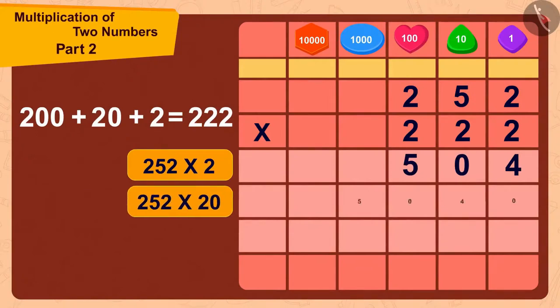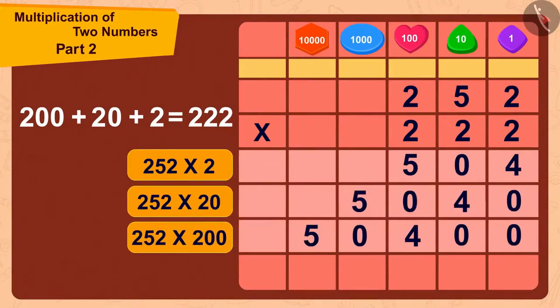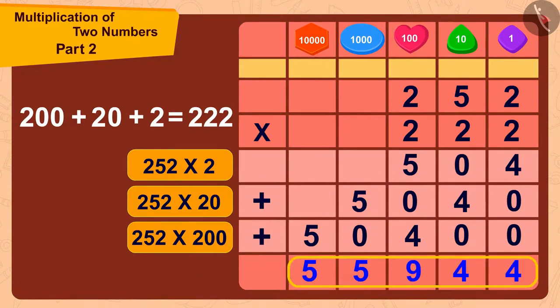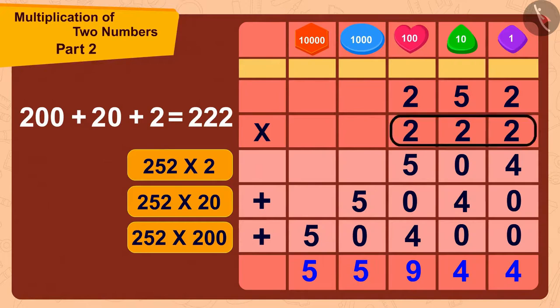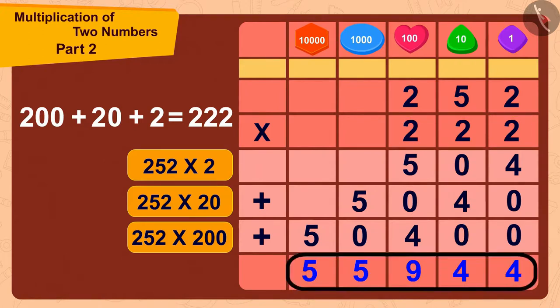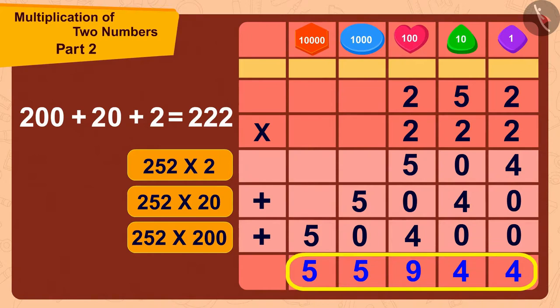We can find the answer to this multiplication in this way. Well done, children. Your answer is absolutely correct. Bhola now has 252 times 222 or 55,944 toffees.